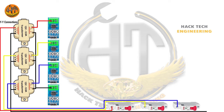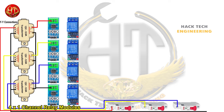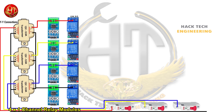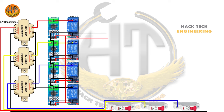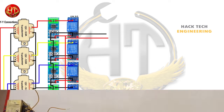Then we took 4 ACS712 current sensors and connected them in series with the output of the transformers. The output of the transformers is also in the star or Y connection. After that, I took 4 single channel relay modules and connected them with the output of the current sensors coming from the transformers. I then common all the ground and VCC of all current sensors and relay modules.